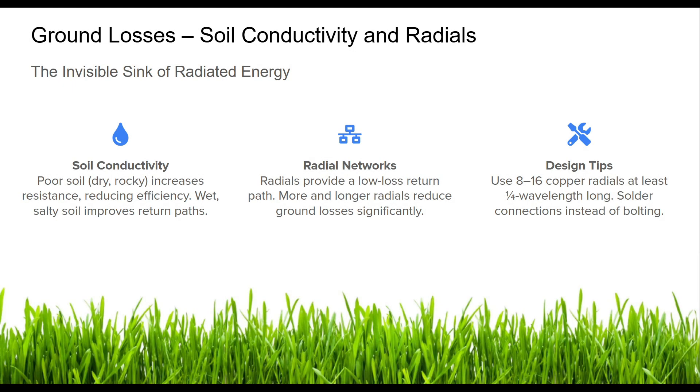Ground losses are one of the biggest hidden inefficiencies in many antenna systems, especially verticals. When the return path for the antenna current goes through the earth, poor soil conditions can introduce substantial resistive loss. Dry, rocky, or sandy ground can be a major culprit. To combat this, engineers use radial systems—networks of wires laid on or buried just below the ground surface. Radials give the current a much lower resistance path back to the antenna base, dramatically improving efficiency. You get the most benefit from the first 8 to 12 radials, after which gains taper off. Material matters too. Copper wires are preferred over steel, and connections should be done correctly.